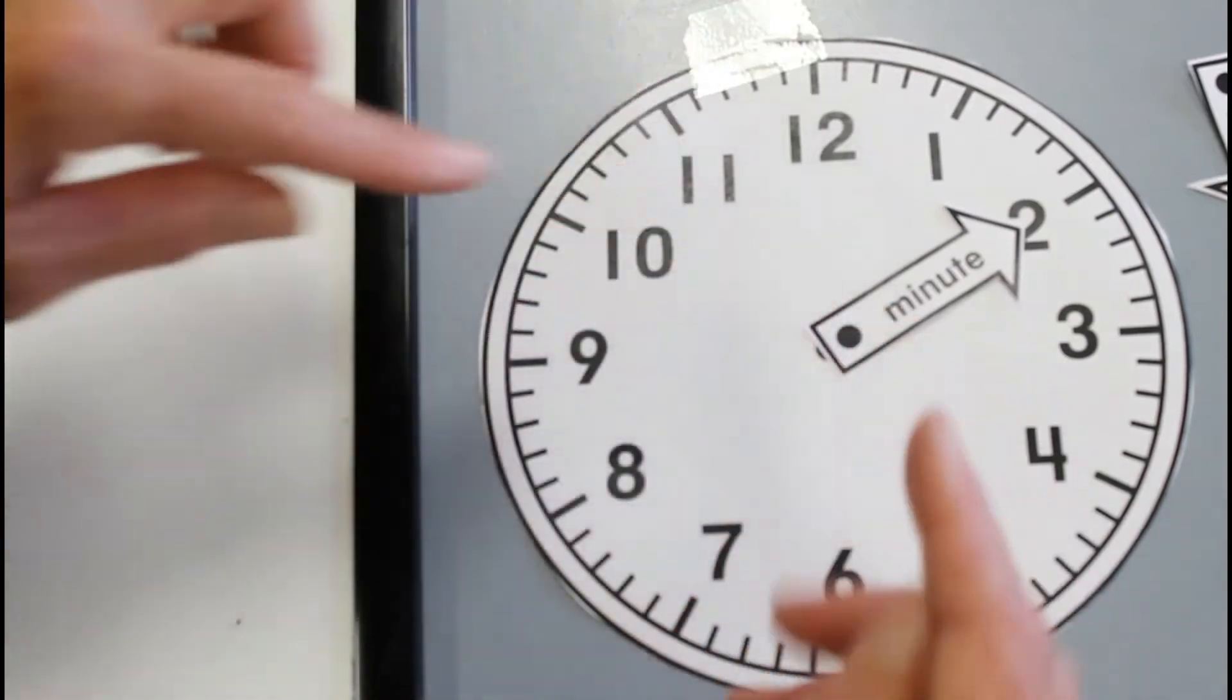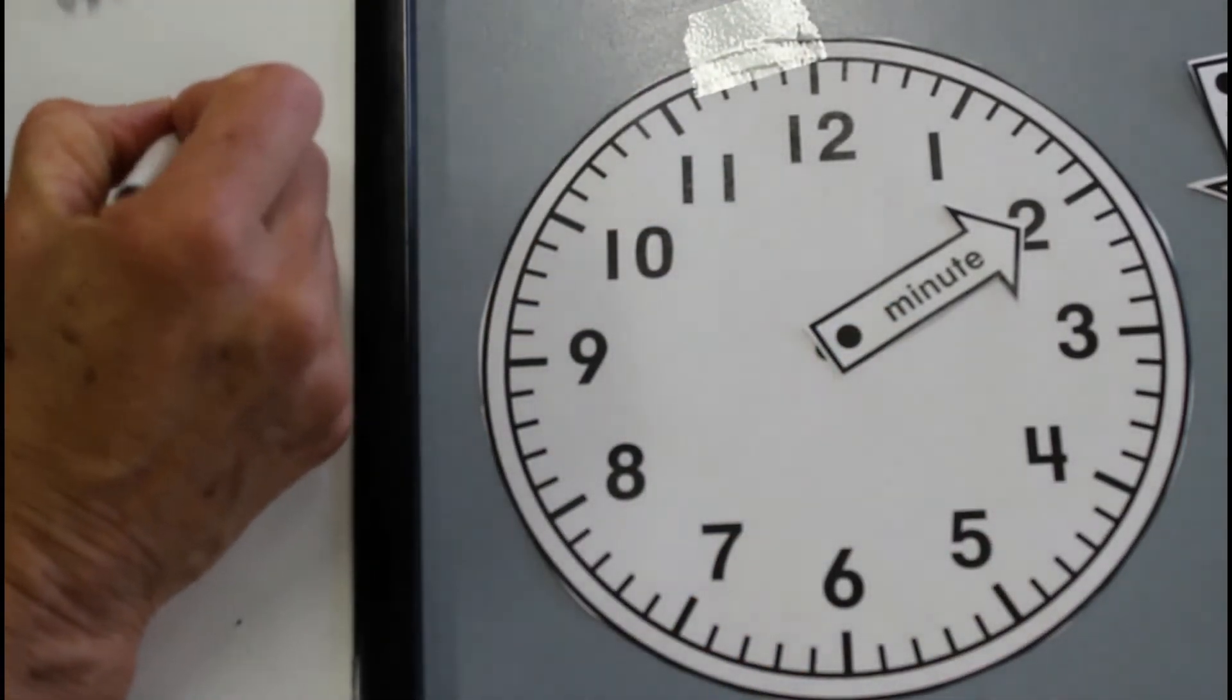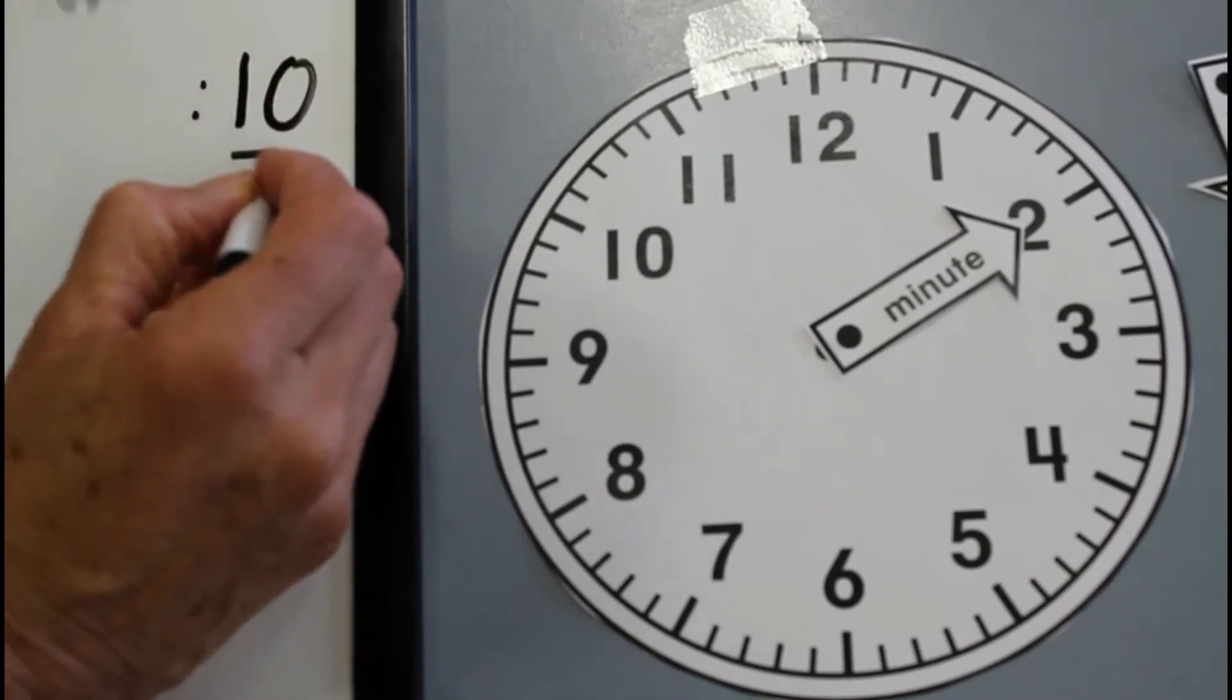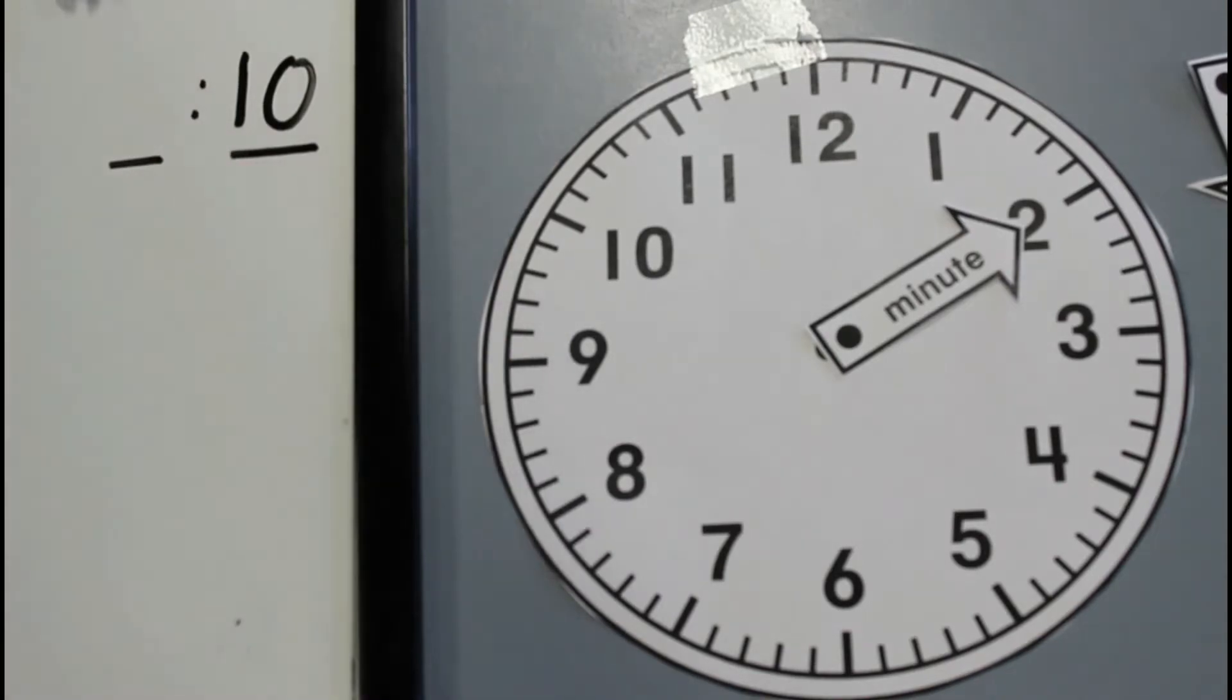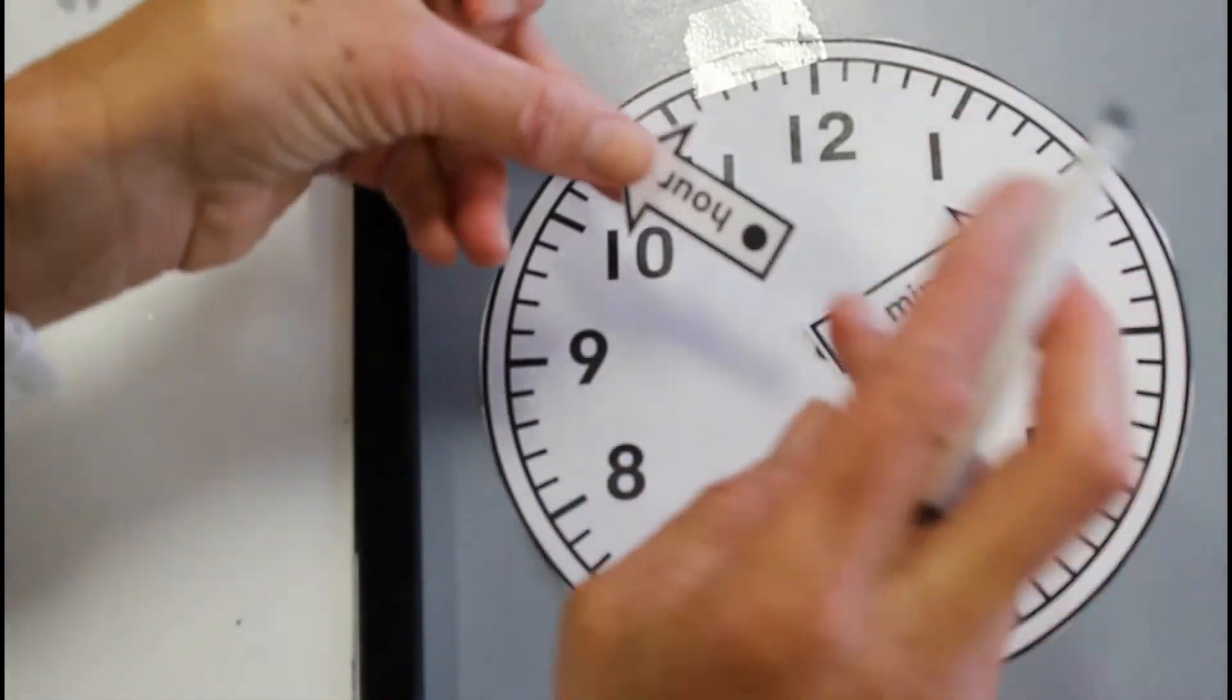So going back to the ten minutes past, how we write that is, the minutes live here on this side of the clock. That's the minutes. And on this side of the clock, we've got the hour. So if I'm to put the hour on this clock, this would be, and I'm going to pop it over here.